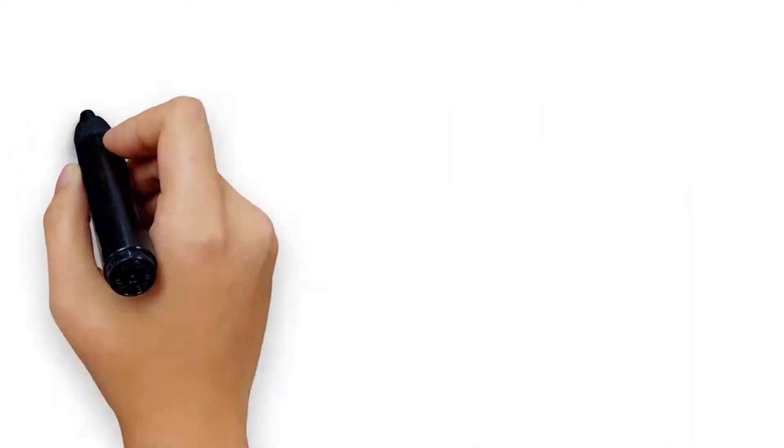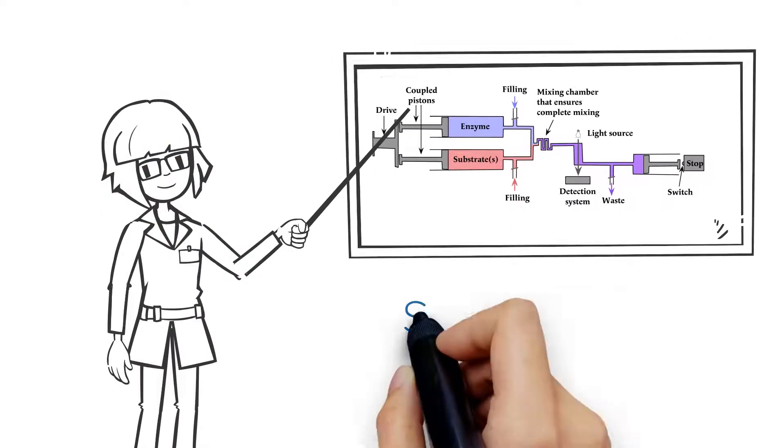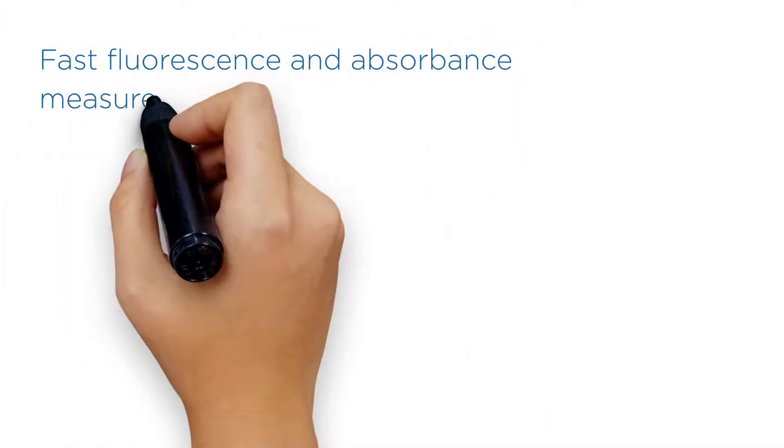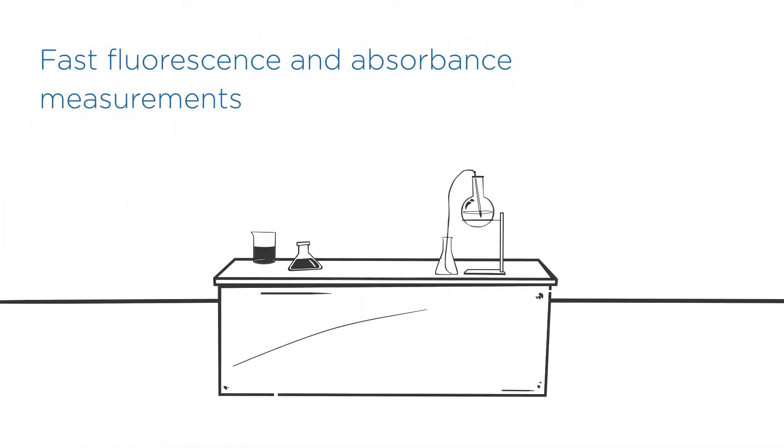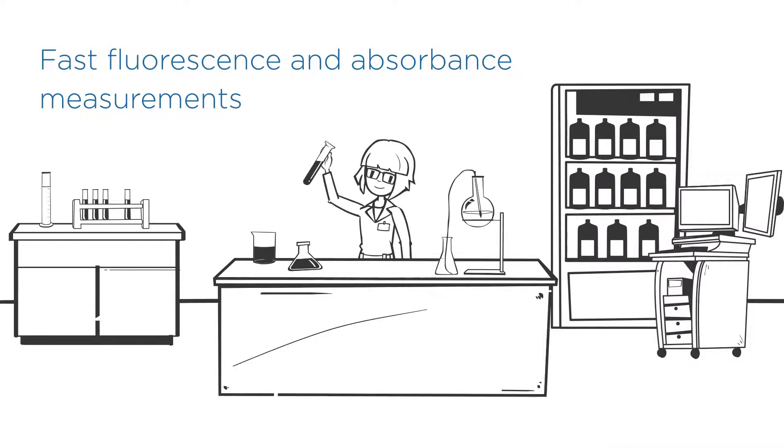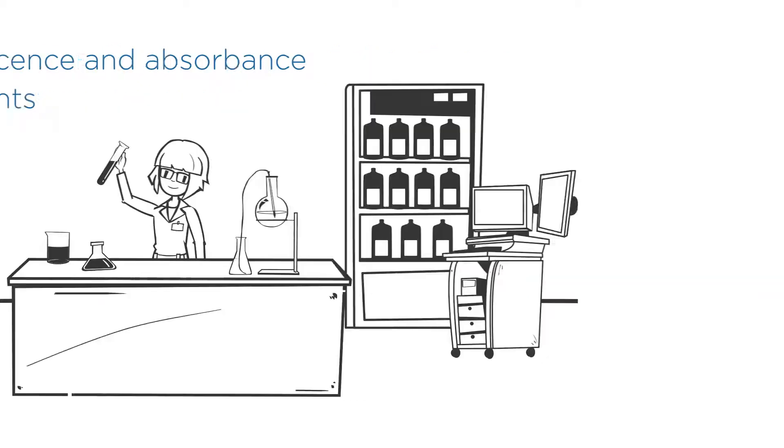The most common method for pre-steady-state analysis of enzyme function is stopped flow spectroscopy. With fast fluorescence and absorbance measurements able to directly monitor changes in substrates, products, intermediates, labels, cofactors or the protein itself in the timeframe of a single enzymatic reaction.